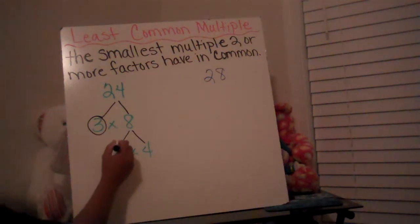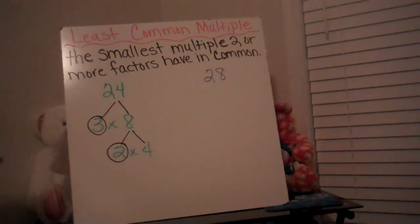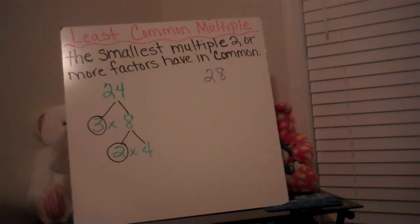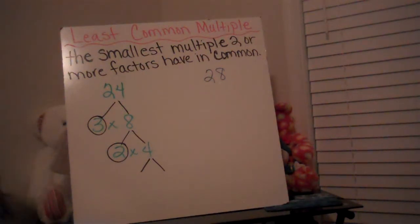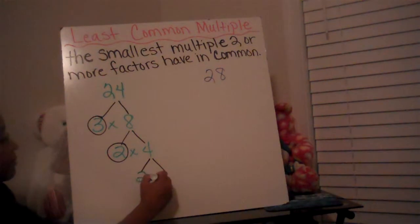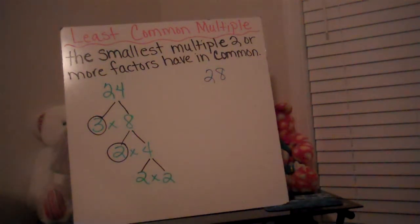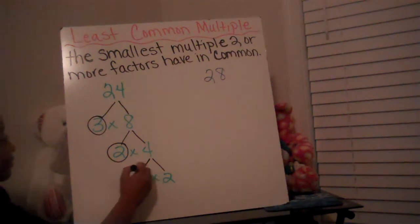2 is prime, so I'm going to circle it. Remember, 2 is the only even prime number — there is no other even number that is prime besides 2. 4 can be broken down; it can be decomposed because it has more than just 1 and itself as factors — it also has 2 as a factor. So I'm going to use 2 times 2 to break down 4, and then 2 is the only even prime number, so 2 is going to get circled.